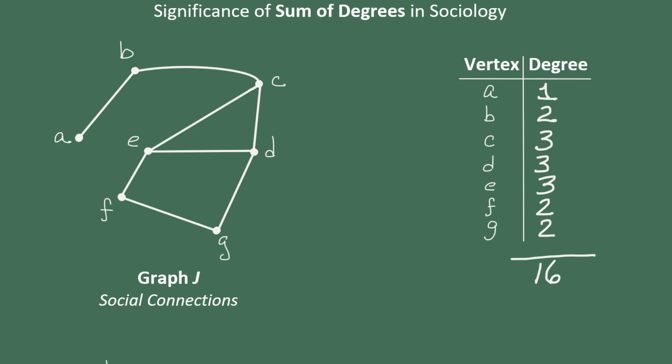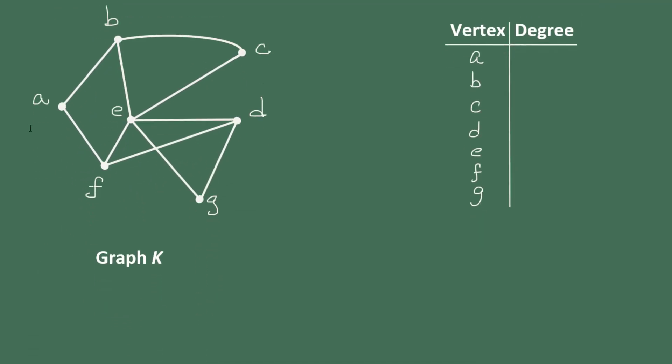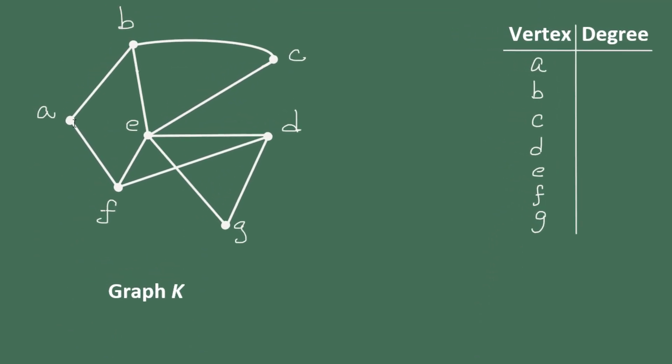Now let's suppose that we revisited the same group of people maybe a few months or a year later, and we drew a graph to represent who was socializing amongst the seven people at this point. Let's find the degree of each vertex now.